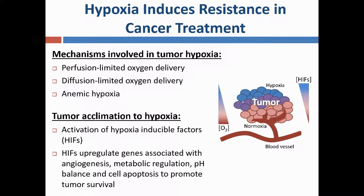As tumors develop regions of hypoxia, they must adjust their metabolism to adapt to this oxygen-depleted microenvironment. Tumors acclimate through activation of hypoxia-inducible factors, which in turn upregulate the expression of multiple genes that promote tumor survival, making solid tumors difficult to treat.